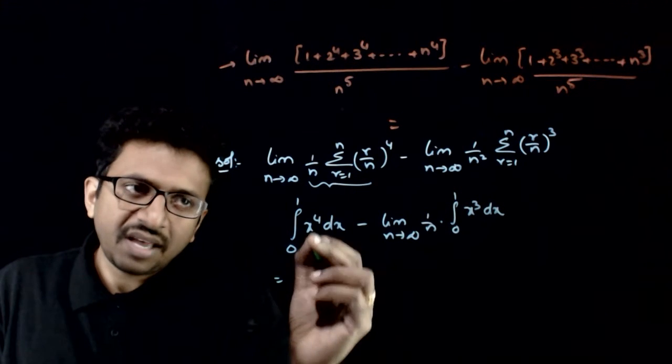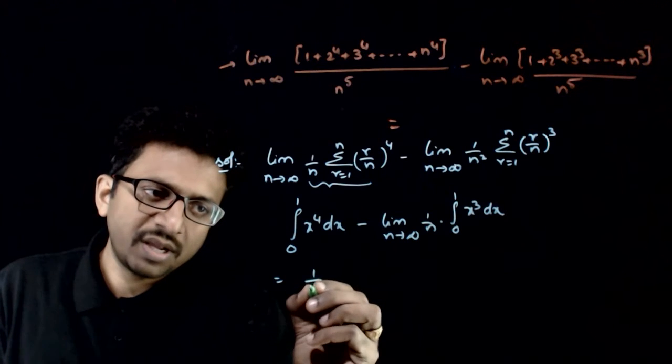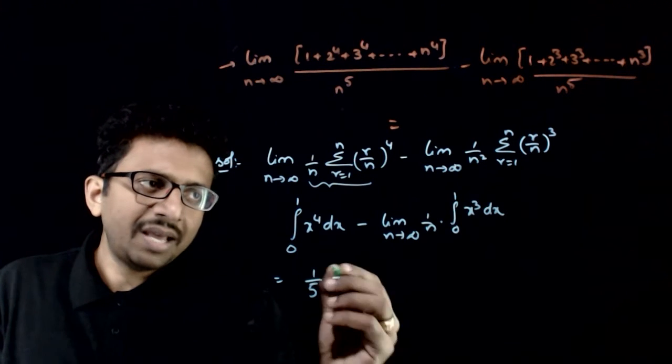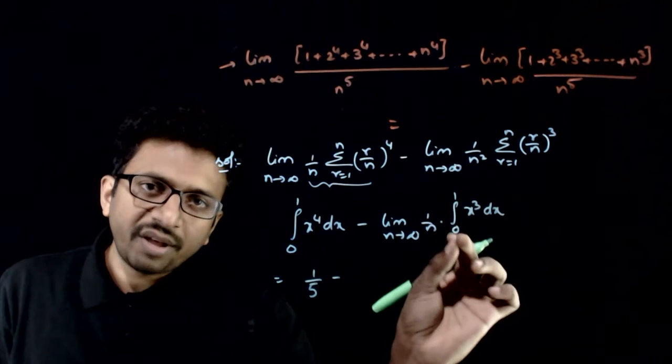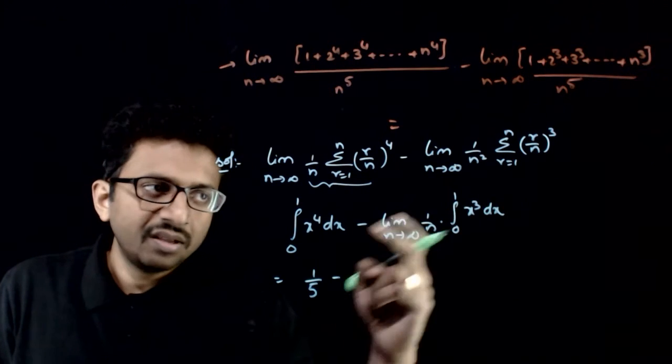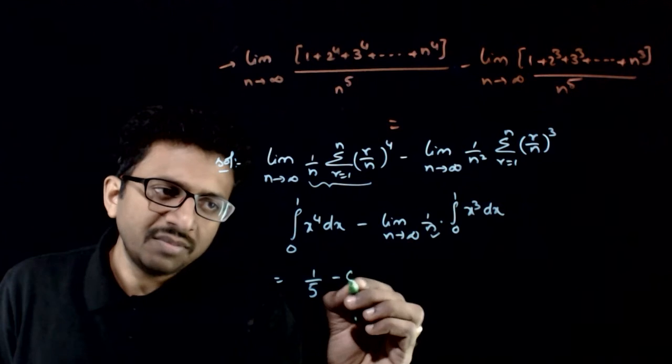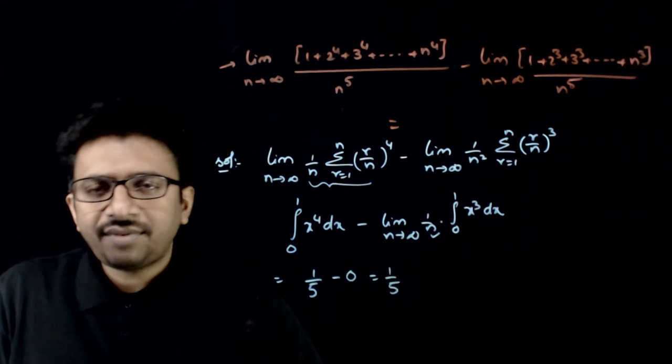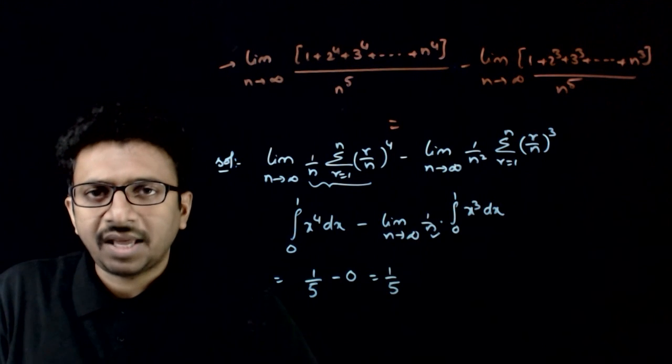This becomes x^5/5 evaluated from 0 to 1, which gives 1/5, minus x^4/4, which gives 1/4, but you have an extra n here. So 1/4 divided by infinity becomes 0, giving you 1/5 as the answer to this question. Thank you.